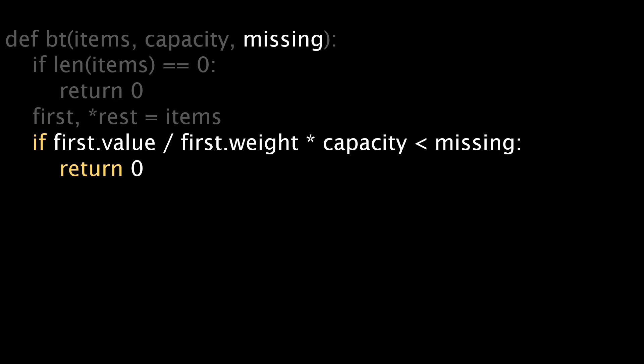Let's look at the upper part first. Because we sorted the items, the first item has the highest value to weight ratio. Let's assume that this is the apple. In the best case, all the remaining items have the same ratio as the apple. If we take the apple's ratio and multiply it with the remaining capacity, we have an upper bound of what value we can at most achieve. If this upper bound is less than the missing term, we know that we can prune the recursion. In this case, we simply return a value of zero.